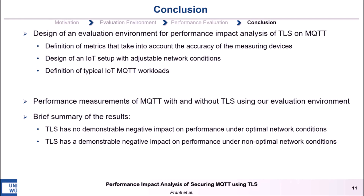At the end, I want to summarize the presentation. We designed an isolation environment to analyze the performance impact when MQTT is secured using TLS. We designed metrics that also account for the accuracy of the measurement equipment. We designed an IoT-typical measurement setup where we can adjust different network conditions and where the MQTT client can use all three quality of service levels. We also defined IoT-typical MQTT workloads to perform performance measurements with and without TLS. To summarize our results: TLS has no significant performance impact when we have perfect network conditions, but TLS has a significant negative impact on performance when network conditions deteriorate. For those interested in a more detailed description of our evaluation environment and performance evaluations, I recommend reading our paper.